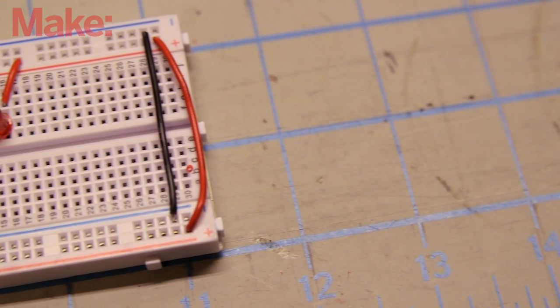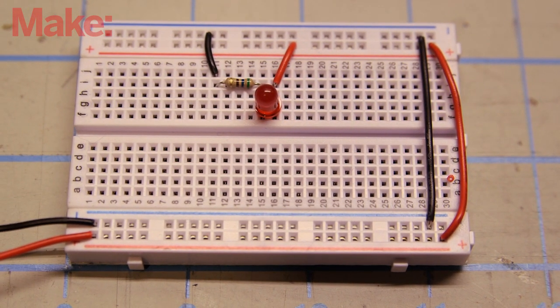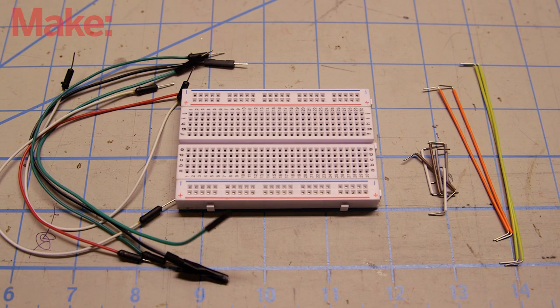When you're wiring a circuit on a breadboard, neatness counts. If you use color-coded jumper wires that fit precisely, you can see your circuit clearly and track down errors easily. There are two types of pre-cut jumper wires: the long flexible ones with little plugs at each end, and the solid ones that are cut into one-tenth inch increments.